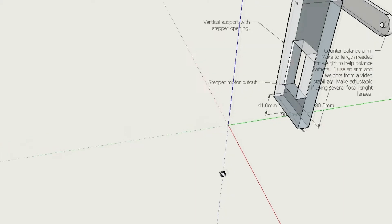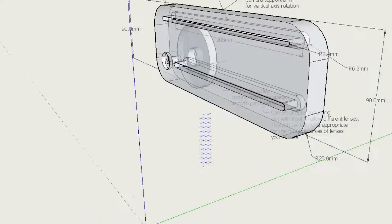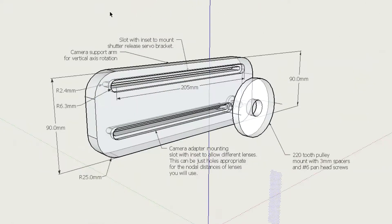Since the vertical support must be automated, it is similar to the horizontal support having bearing mounts and an opening for a stepper motor. The vertical arm has a slot to adjust the position of the camera and a slot to mount the shutter release mechanism.